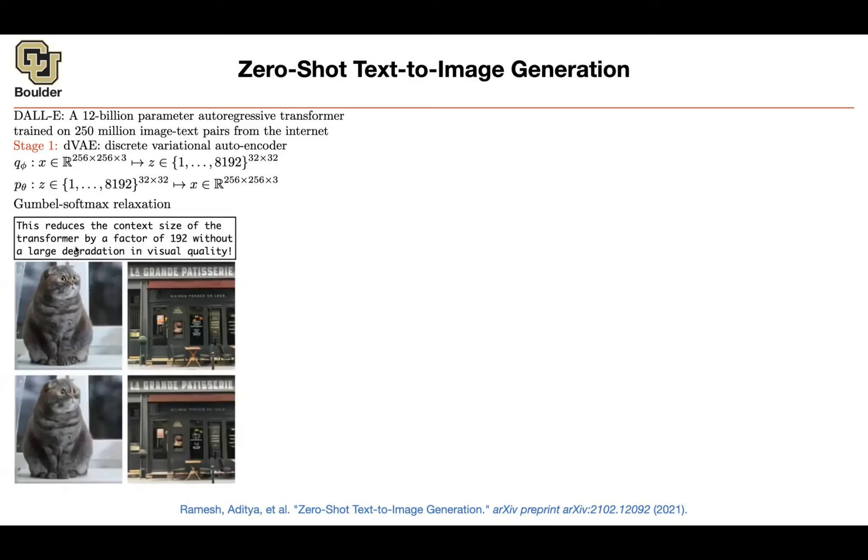What did we just achieve? Our previous context was very big. It was 256 by 256 by 3. Now we turned it into 32 by 32. This is 192 times smaller in terms of your context. So you reduce the context size.